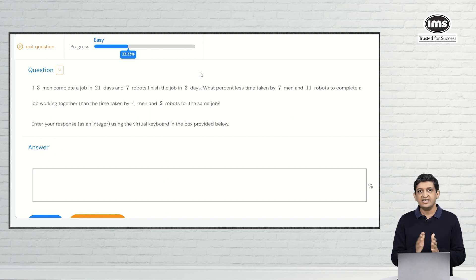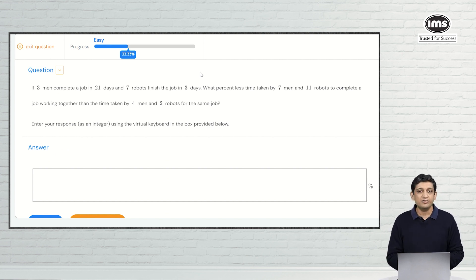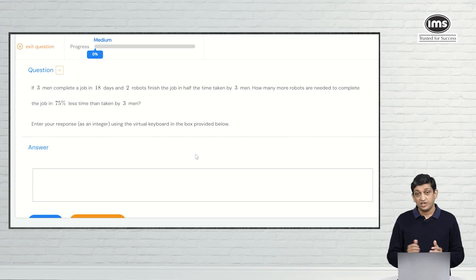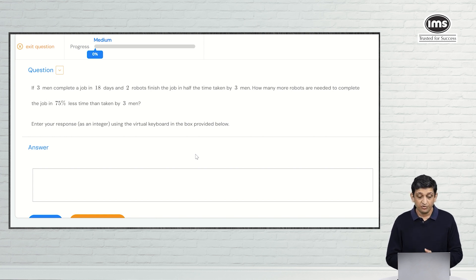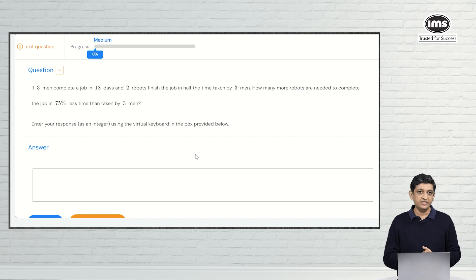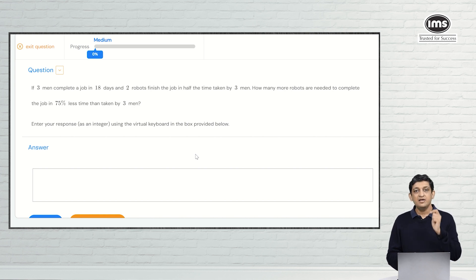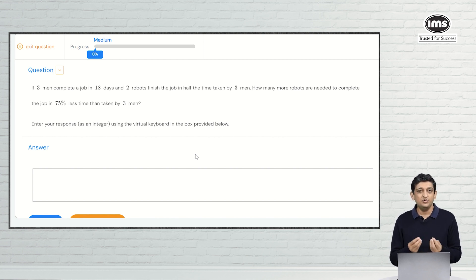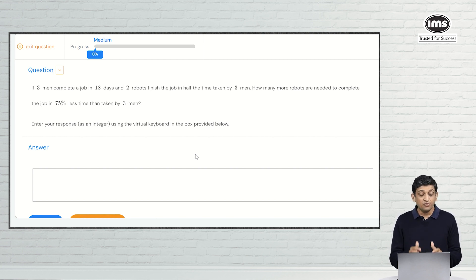Let's cross the easy level on the progress bar and move to the medium level. We have now moved to the next level, where questions will be moderate or medium in difficulty — slightly harder than what we were solving earlier. Keep solving these questions until the system puts your competency at 100% at the medium level. Then you can see your achievement in terms of what you now know about the topic compared to before.